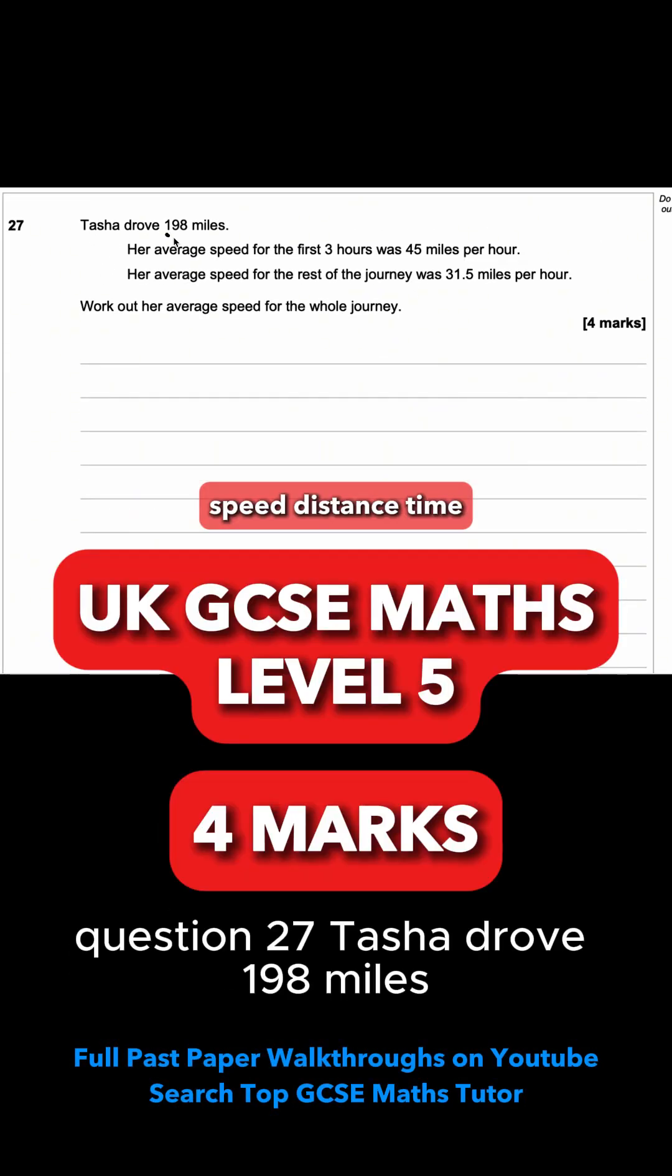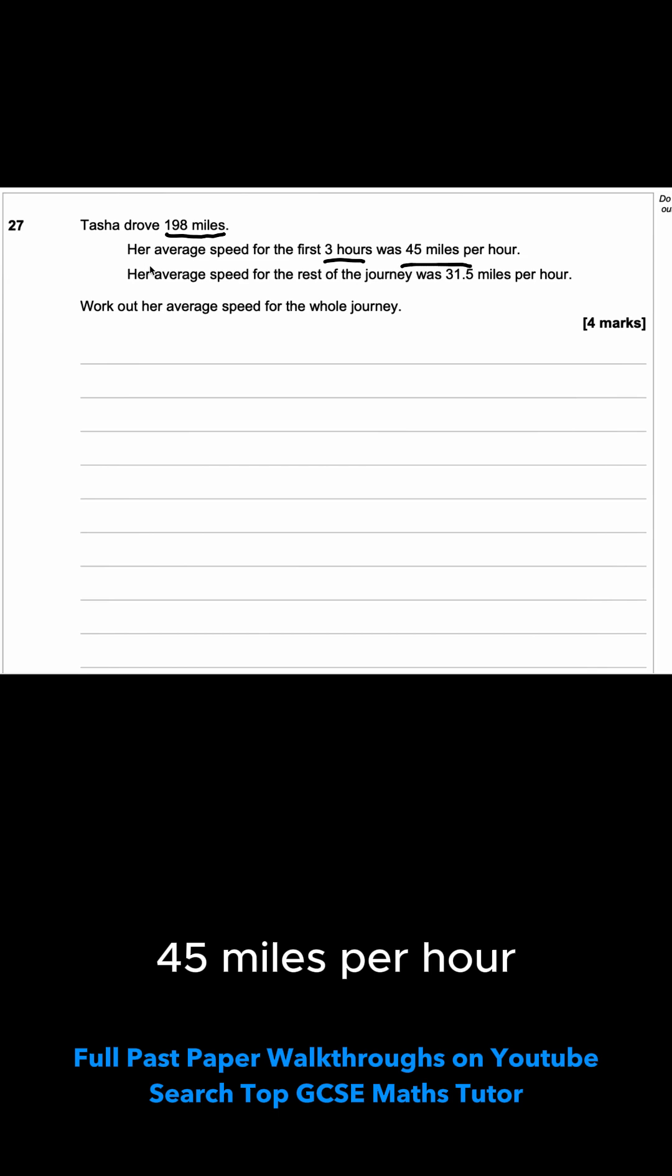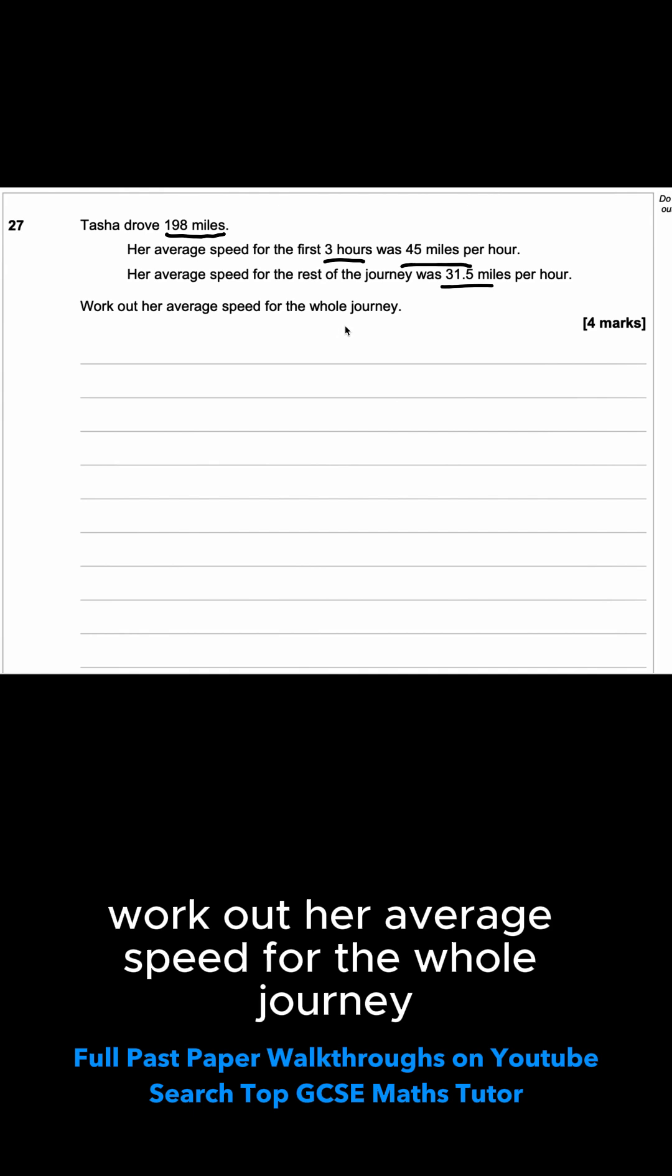Question 27. Tasha drove 198 miles. Her average speed for the first three hours was 45 miles per hour. Her average speed for the rest of the journey was 31.5 miles per hour. Work out her average speed for the whole journey.